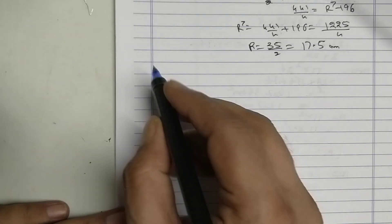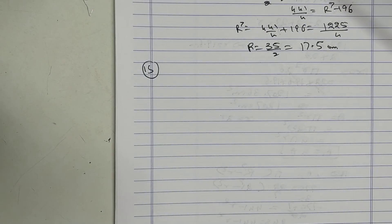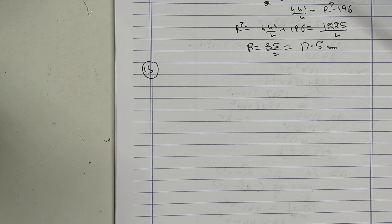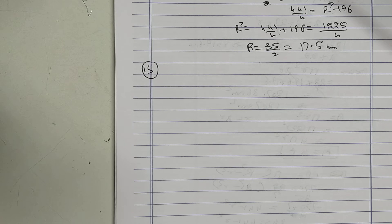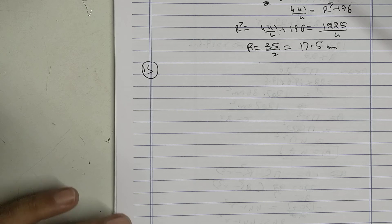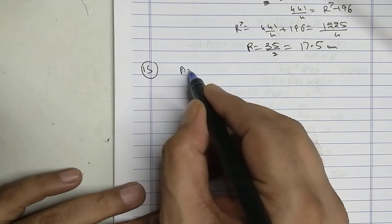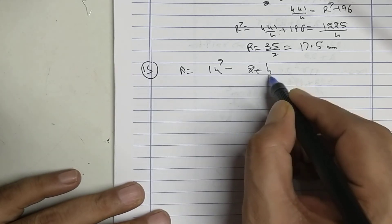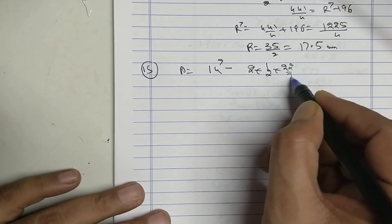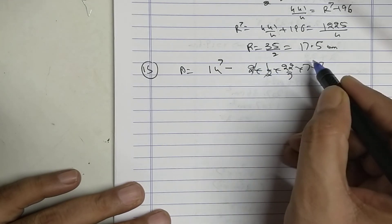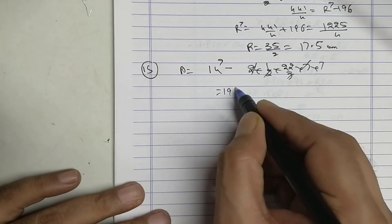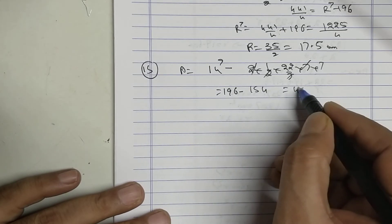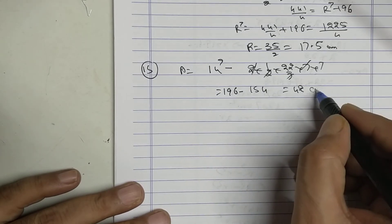Sum number 15. If you see the figure, for the area from the square I will minus 2 semicircles. Area equals square minus 2 into half into π, 7 into 7. 196 minus 154 equals 42 centimeter square.